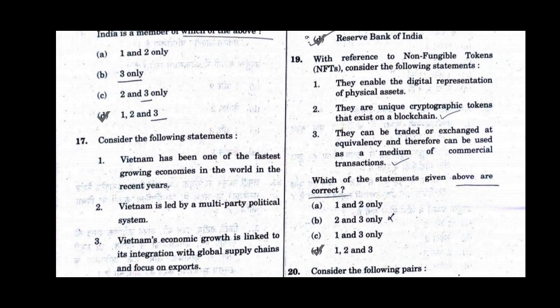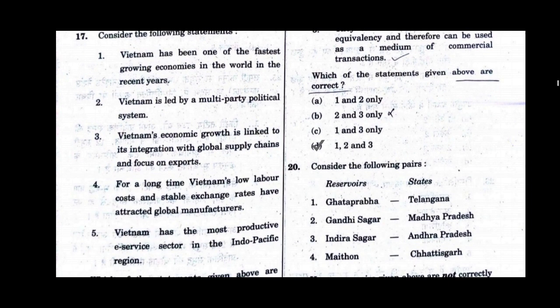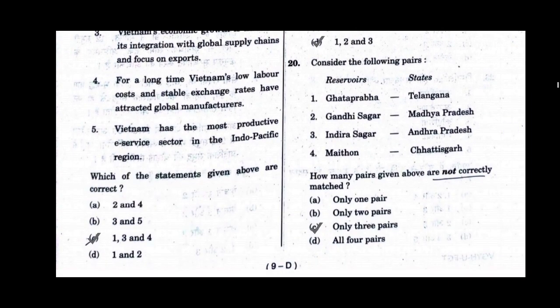Question number 19. With reference to non-fungible tokens, consider the following statements. Which of the statements given above are correct? Option D will be the correct answer for question number 19: statements 1, 2 and 3. Question number 20. Consider the following pairs — reserve words and states. How many pairs given above are not correctly matched? Option C will be the correct answer: only three pairs.